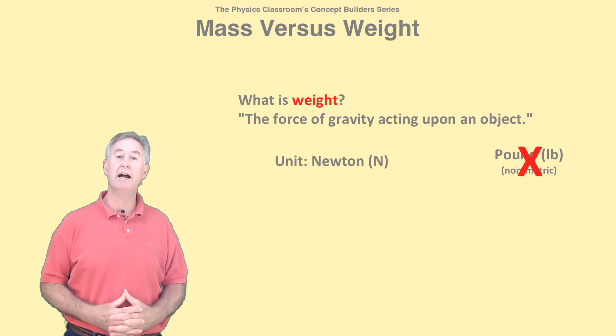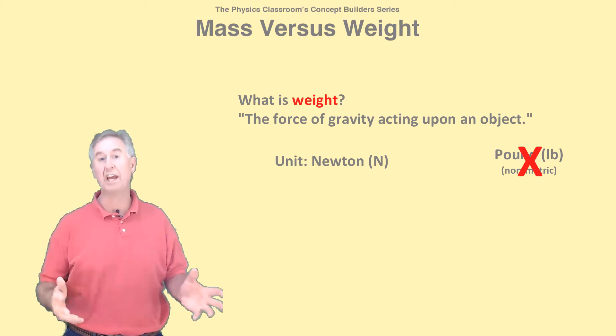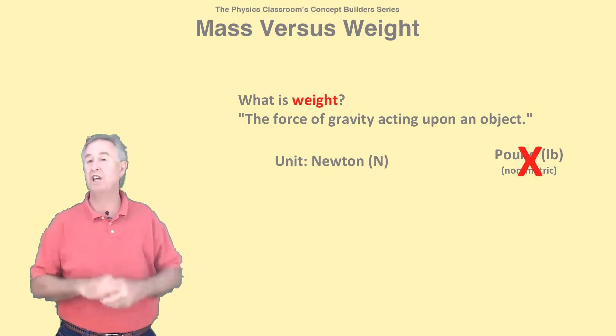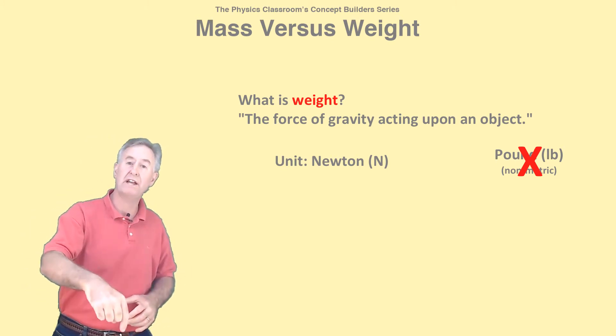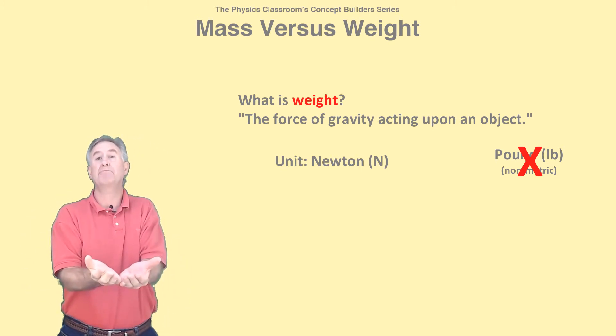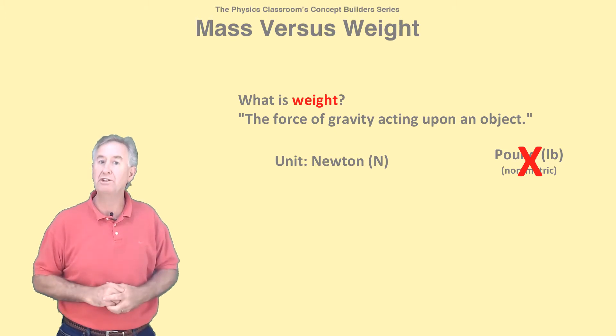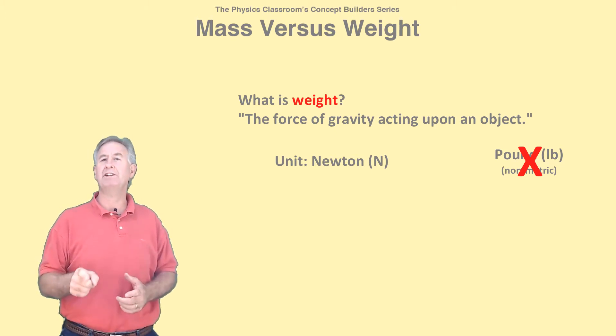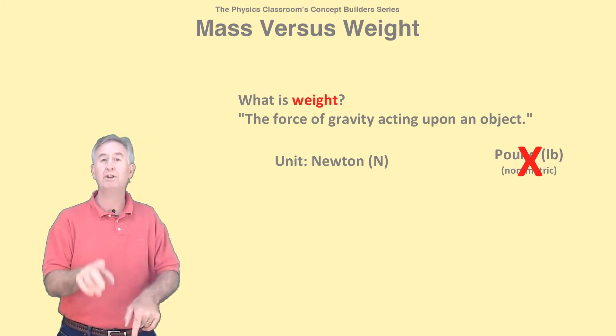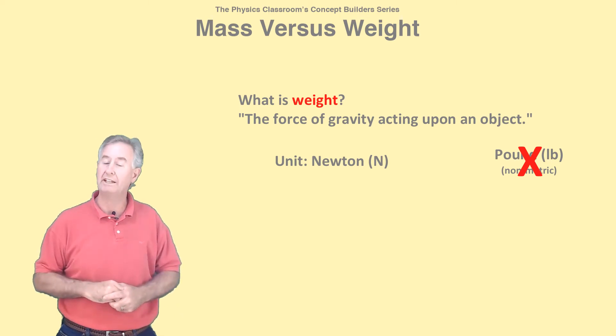You can determine an object's weight by weighing it. That is, you put the object on a scale. Gravity pulls it down. The scale pushes it back up. The scale reads the up force. Since it balances the force of gravity, you know the scale tells you the weight of the object.